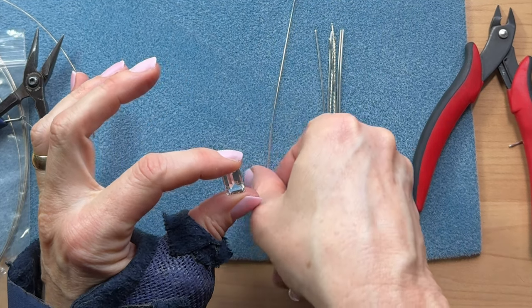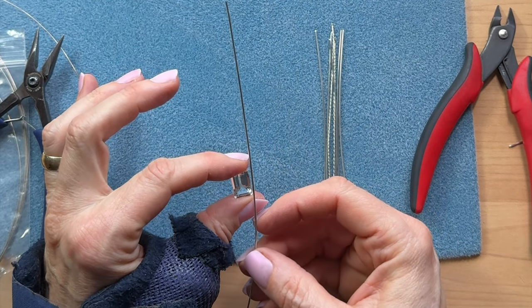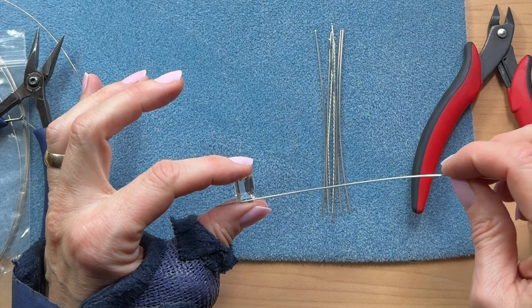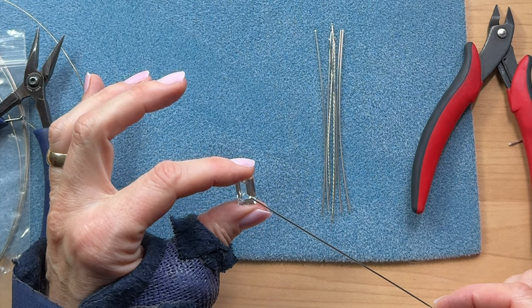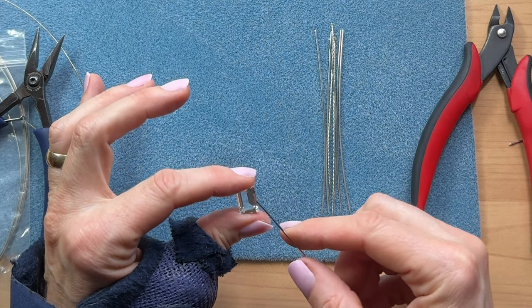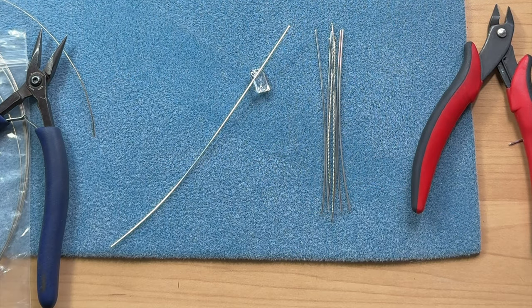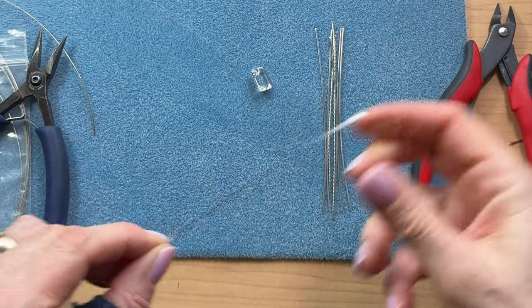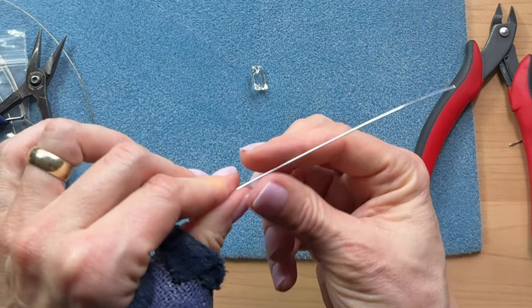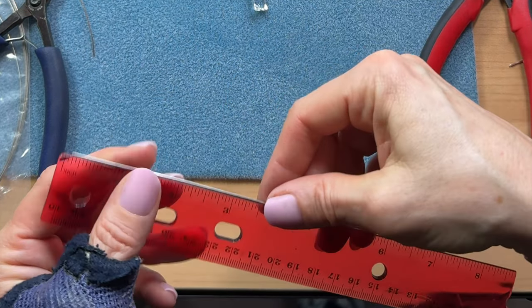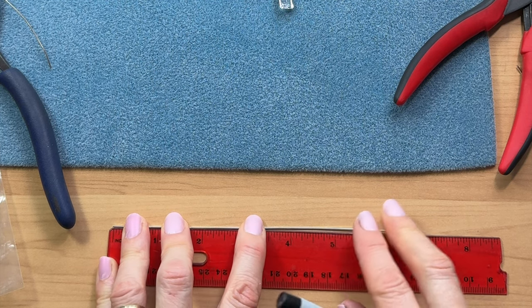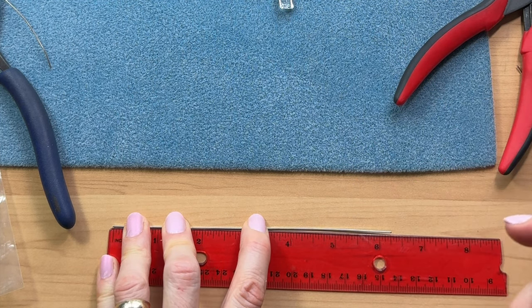Where do I want my prongs? Do I want them coming in on the side? Or the corner? I think I want to do extra complicated and try to make my prongs come in on the corner. Put those aside. We're just going to work on our prong wire. I'm going to find the center.